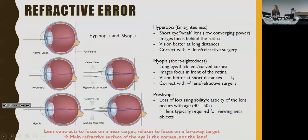On refractive error: far-sightedness or hyperopia occurs with a short eye or weak lens where images focus behind the retina. You correct it with a biconvex or plus lens. Myopia is the opposite — a longer eye or thicker lens where images focus in front of the retina. You correct that with a biconcave lens. Presbyopia is similar to hyperopia but occurs with age, typically in your 40s and 50s, with the same treatment principles. Worth noting: while we think of refractive error in terms of the lens, the cornea is actually the main refractive surface of the eye.